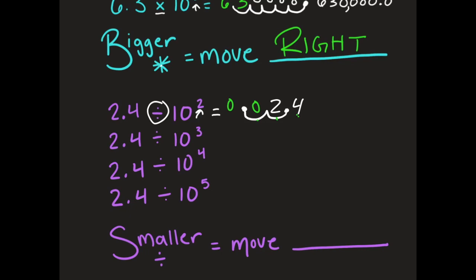Coming to the next example, I have 2 and 4 tenths and I'm getting smaller by 3. I move that decimal point 1, 2, and 3 times and fill in with zeros. My answer is 0.0024 — that's 0 in the tenths, hundredths, thousandths, and ten-thousandths places — so 0 and 24 ten-thousandths.